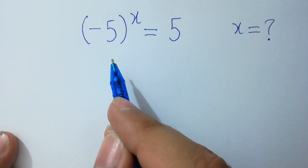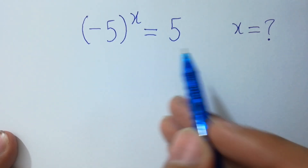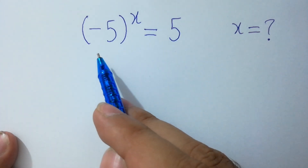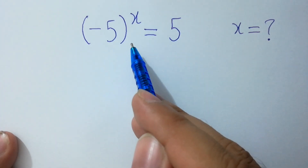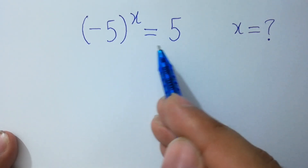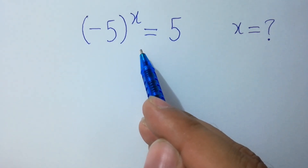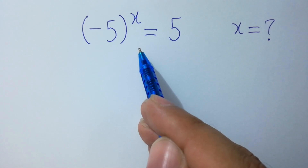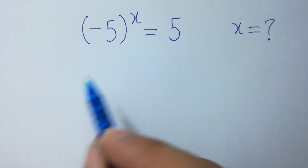Hello friends. Find the value of x if negative 5 to the whole power x equals 5. I am going to show this problem with two methods: the first method is common logarithms, and the second is natural logarithms.